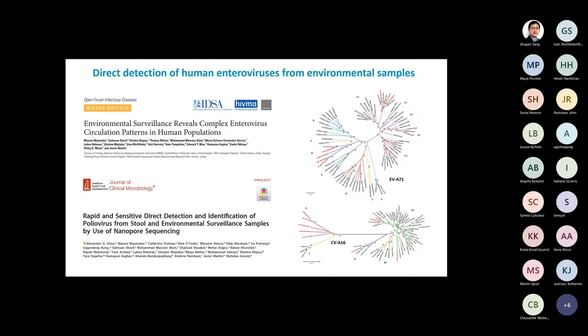We depend on cell cultures and virus isolation to detect poliovirus, which is very time-consuming and limits how many samples can be tested simultaneously. We are always interested in developing direct detection methods for poliovirus and other enteroviruses. We now have quite good methods that combine PCR with next-generation sequence analysis using either Illumina or Oxford Nanopore technology, allowing us to sequence mixtures and distinguish different viruses from each other.